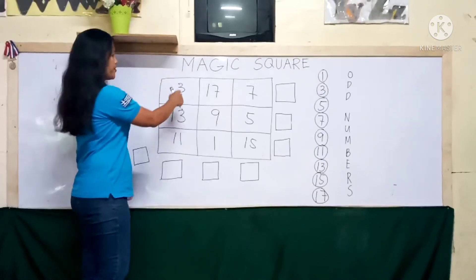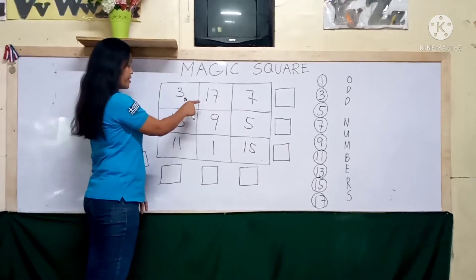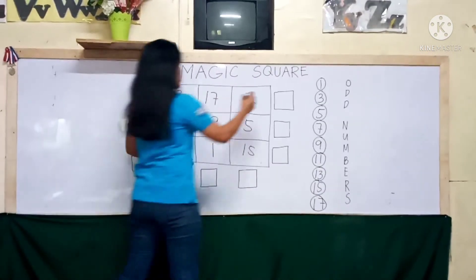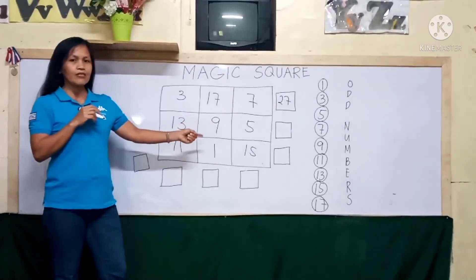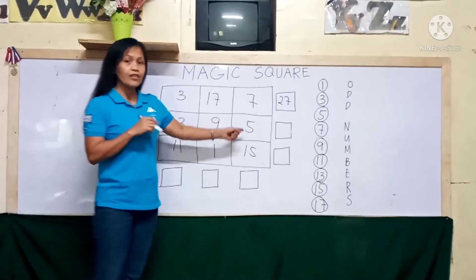Okay, let's start with the 3 plus 17, 20, plus 7, 27. 13 plus 9, 22, plus 5, 27.